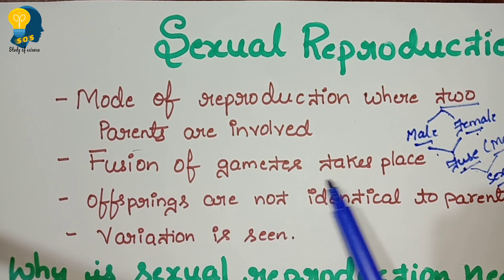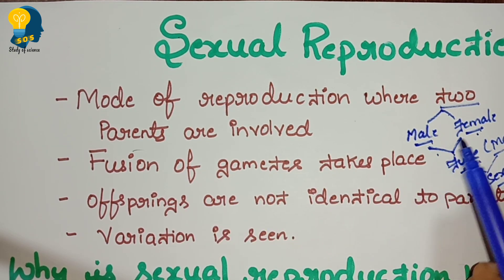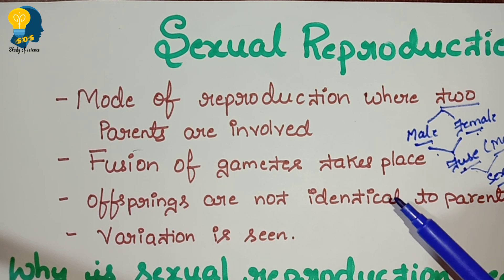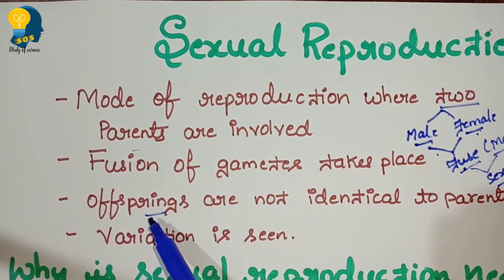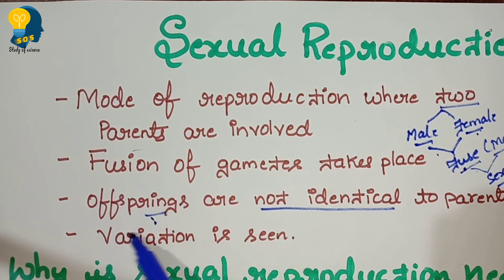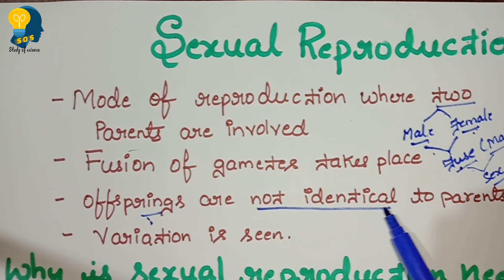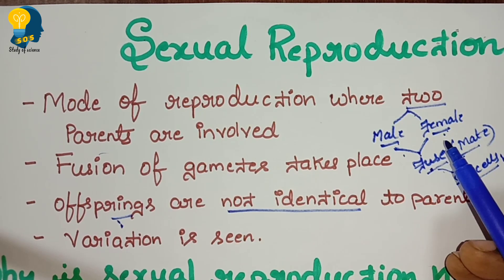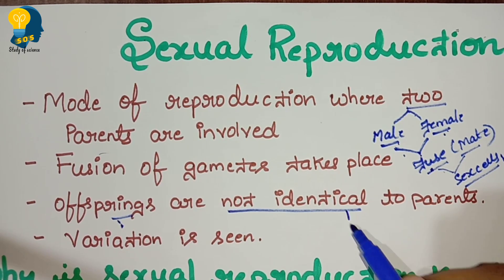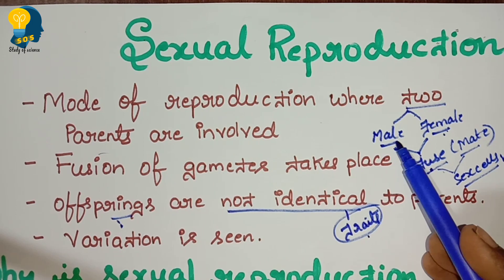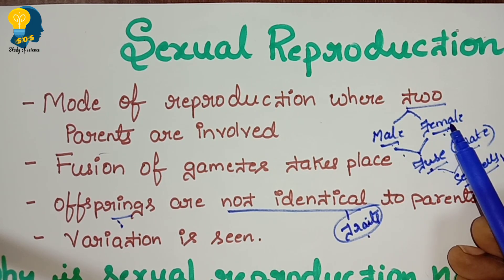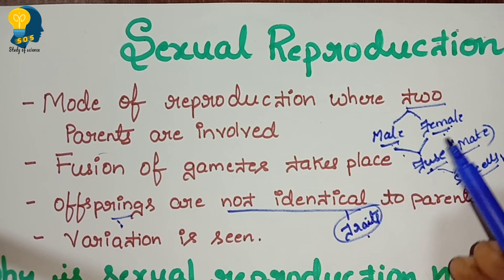This is what happens exactly under sexual mode of reproduction — the fusion of gametes takes place between the male and the female. As a result, the new organism which is formed, we call it as offspring. These offspring formed under sexual mode of reproduction are not identical to their parents — they are not completely the same as father and mother.